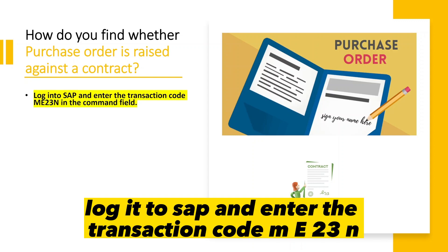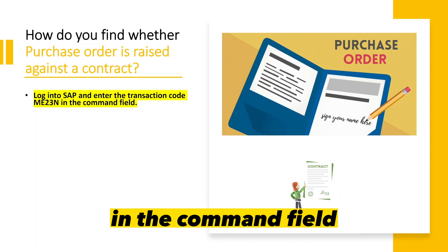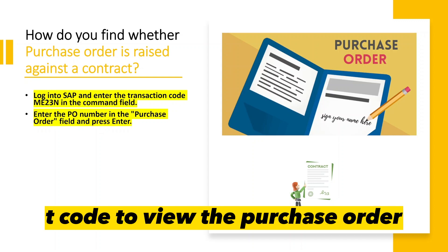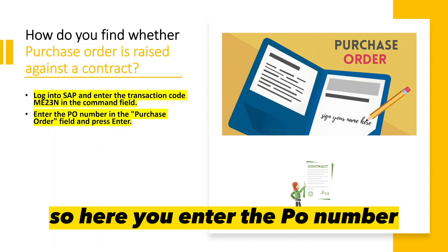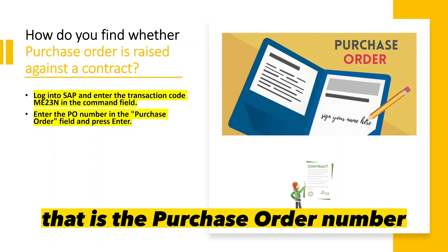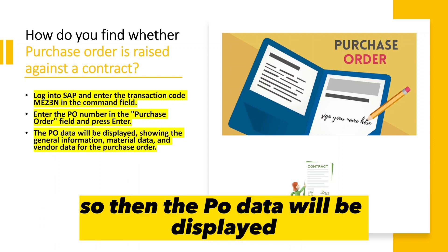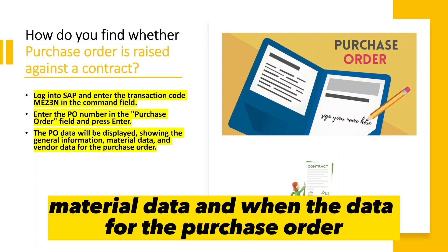Log into SAP and enter the transaction code ME23N in the command field. This is the T-code to view a purchase order. Enter the purchase order number in the purchase order field and press Enter. The PO data will be displayed showing the general information, material data, and vendor data for the purchase order.